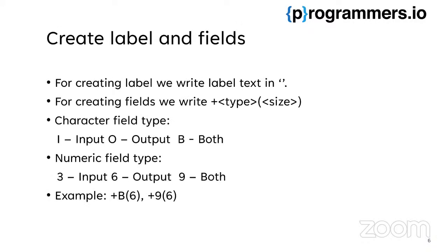To create labels and fields on the screen: for creating a label, write the label text in apostrophes. For creating a field, use a plus sign followed by the type and size in parentheses. For character type fields, use I for input, O for output, and B for both. In an input field we can only take input from the user; in output we only display data; in a both field we can take input as well as give output to the user.